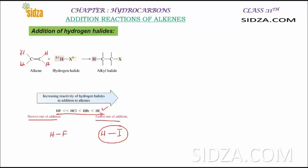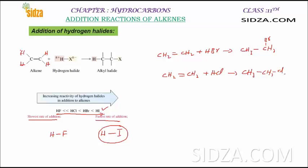Let's take a couple of examples. If you take alkene CH2=CH2 and add HBr, the HBr will add across the carbon-carbon double bond and you get CH3-CH2Br. Similarly, if you take ethene and react with HCl, you get CH3CH2Cl. And if we take CH2=CH2 and HI, we get CH3CH2I. So these are the different alkyl halides we get by the addition of hydrogen halides to the alkene.